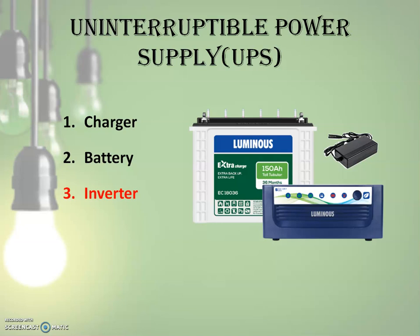The charger is connected to the power supply at home and charges the battery by taking power from the mains. The charger has a rectifier in it which converts the AC from the mains into DC. The battery is where the charge is stored, which can be used later during a power outage. Importantly, the charge is stored in the battery in the form of DC, but appliances need alternating current. This is where the inverter steps in — it converts the DC to AC, enabling the appliances to run using power from the battery.